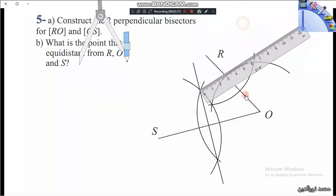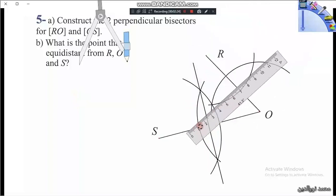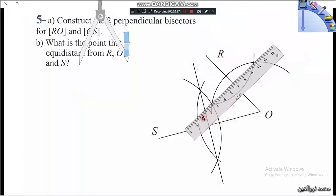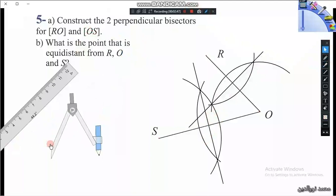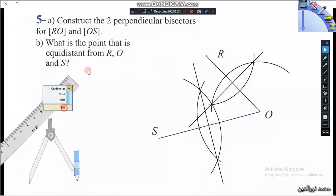And then it asks, what is the point that is equidistant from the points R, O, and S? So the point of intersection of these two perpendicular bisectors should be equidistant from R, O, and S.